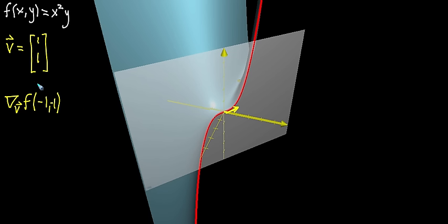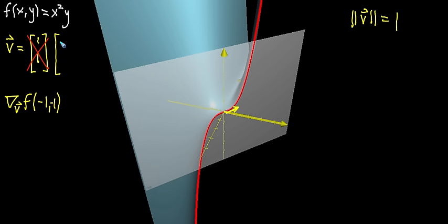But you have to be very careful: if you're going to interpret this as a slope, it has to be the case that you're dealing with a unit vector — that the magnitude of your vector equals 1. It doesn't have to be, you can account for it later, but it's easier to think about with a unit vector. So instead of (1, 1), I'll use whatever vector points in that same direction but has unit length. In this case, that's (√2/2, √2/2) for each component — a vector with magnitude 1 pointing in that direction.